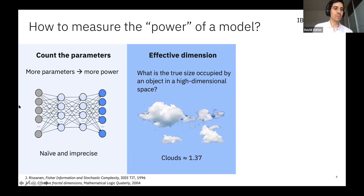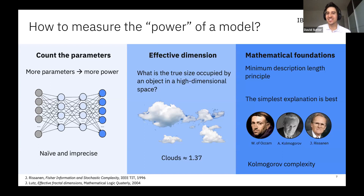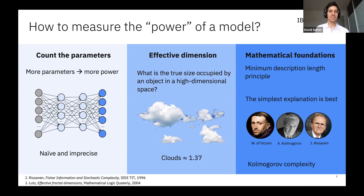What we propose is a refined version: counting the number of relevant parameters. This is called effective dimension. The effective dimension tries to capture what is the number of parameters that are really effective — that are relevant. It has its origins in geometry and other areas, based on minimum description length and Kolmogorov complexity. So if you get lost on what the effective dimension is doing, just keep in mind that it tries to quantify the number of parameters which are effective and relevant.